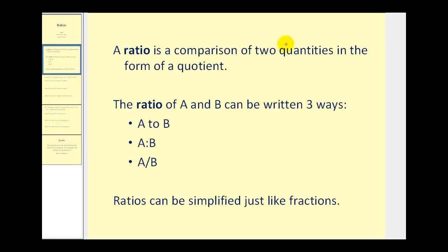A ratio is a comparison of two quantities in the form of a quotient. The ratio of A and B can be written three different ways: A to B, A colon B, or A divided by B written in fraction form. Ratios can also be simplified just like fractions.